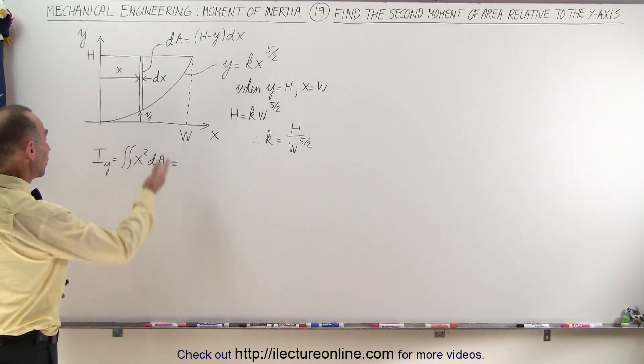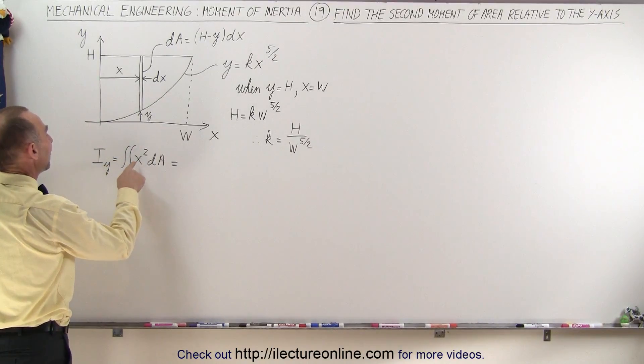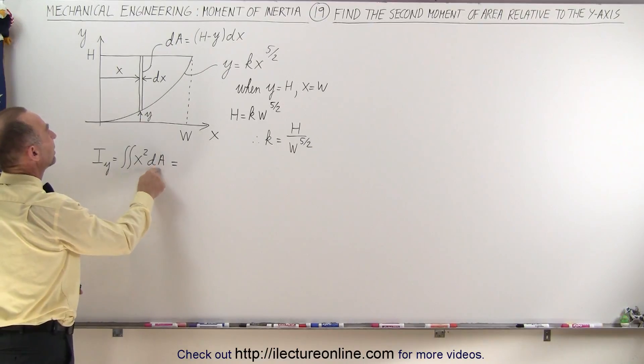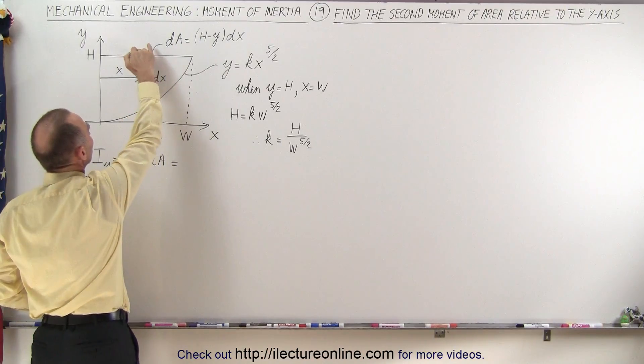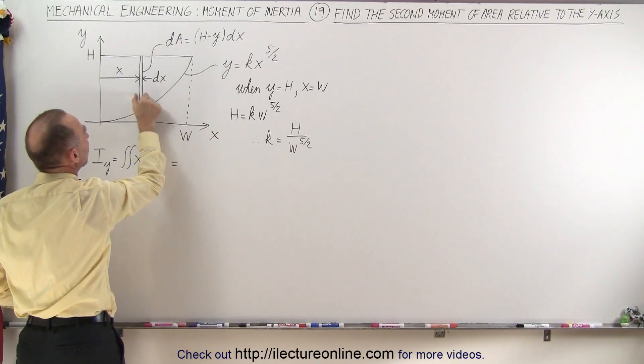Now of course we know that the equation is a double integral of x squared dA, where dA is defined as a small little strip that would be the height, which is h minus y, and the width, which is dx.